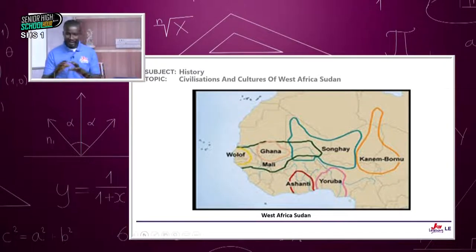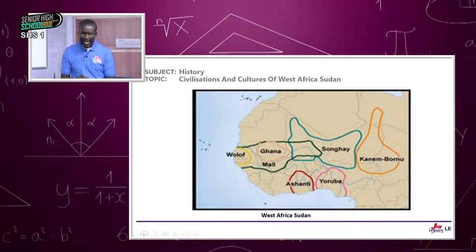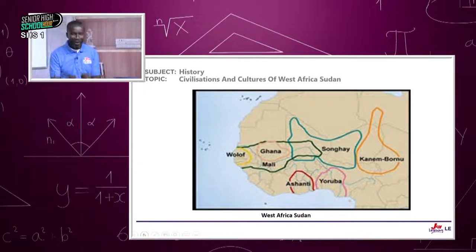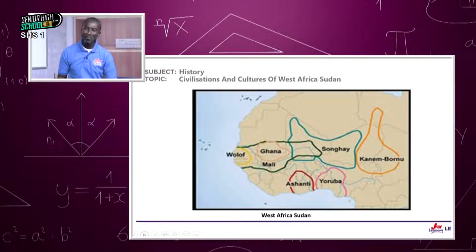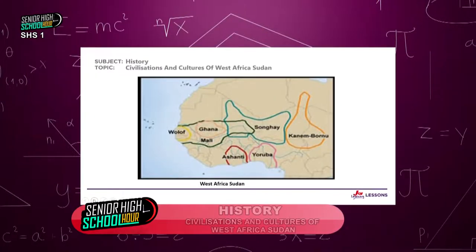On the map of West Africa Sudan, you'll find Kanembonu, Songhai, Ghana, Mali, and at the extreme west, you'll find Wolof. In the Atlantic Ocean, you'll find the Cape Verde Island, which is also part of West Africa today.